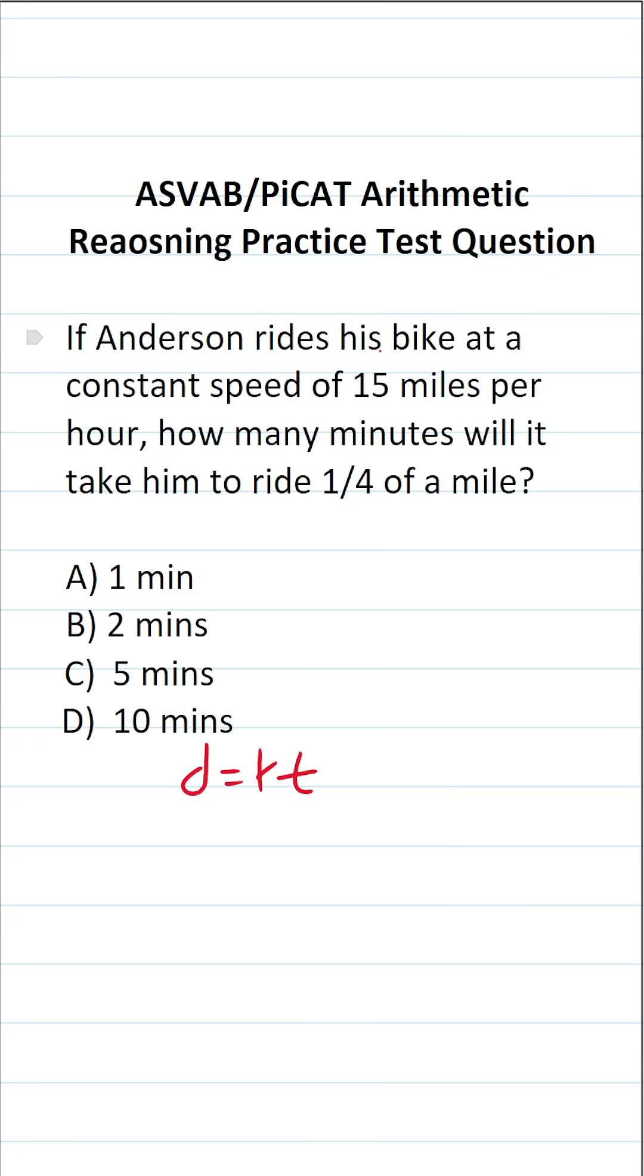In this case, we know that he rides his bike at a rate of 15 miles per hour. We want to know how many minutes, that's in reference to time, it'll take him to ride a distance of a quarter mile. So this becomes one-fourth equals 15t.